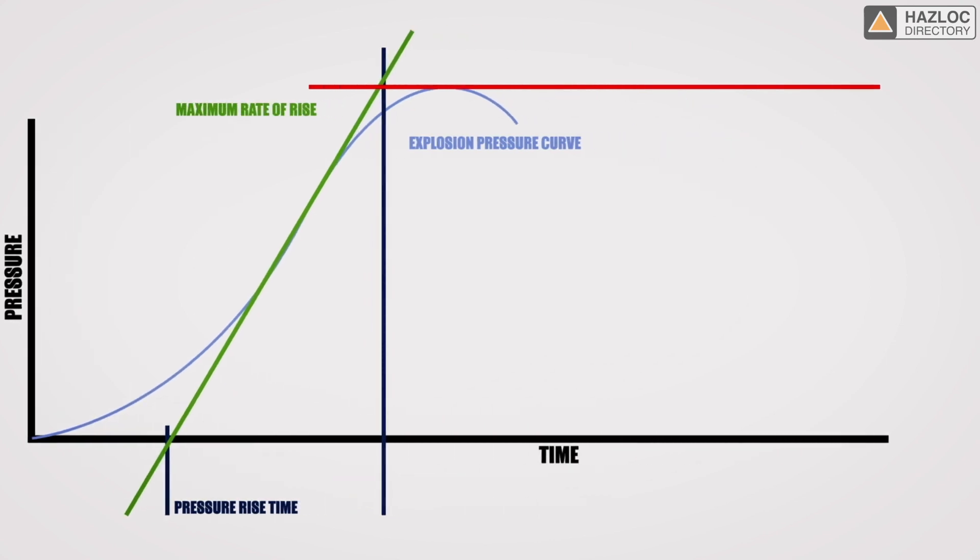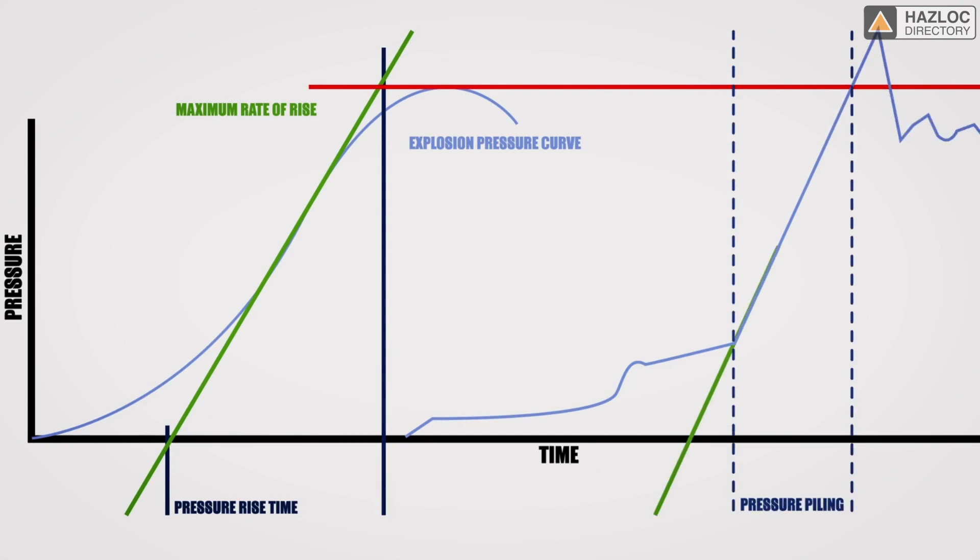Pressure piling changes the dynamic. The pressure curve becomes an irregularly shaped wave that illustrates the cascading effect of pressure piling, the multiple explosions that take place. Pressure piling involves, as the name implies, the build-up of pressure, which can be higher than the expected peak pressure. There is presumption of pressure piling when the pressure rise time is less than 5 milliseconds.